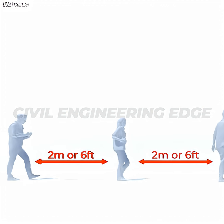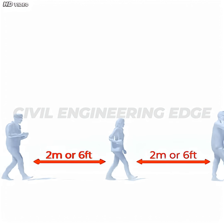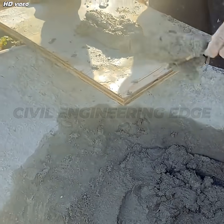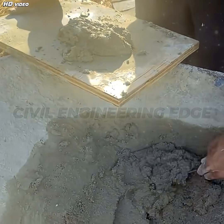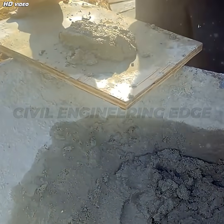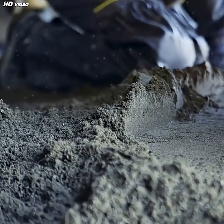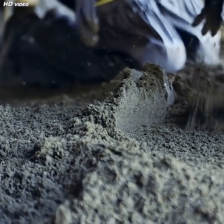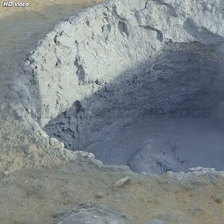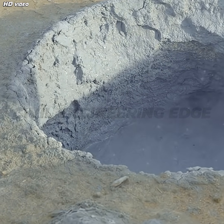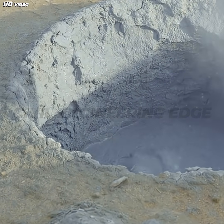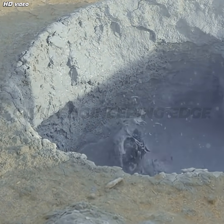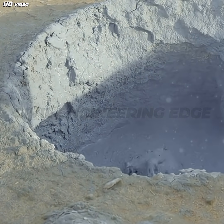Stick with us, and by the end of this video, you'll be able to tell them apart like a pro. Segment one: cement, the binder. Let's start with cement. Cement is essentially the glue that holds everything else together in a concrete mix. It's a fine, powdery substance made by superheating limestone and clay at temperatures around 1,450 degrees Celsius.